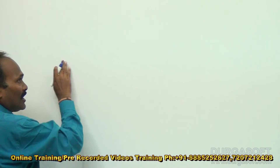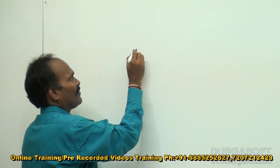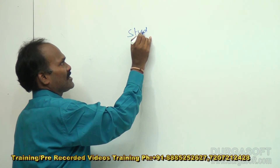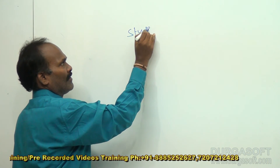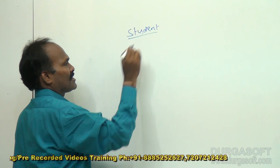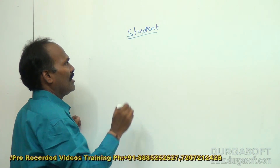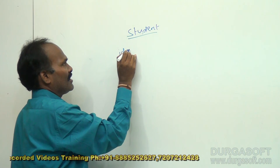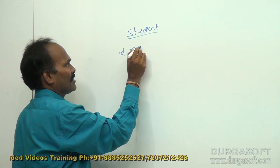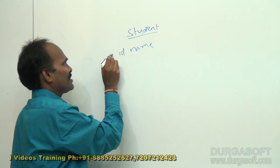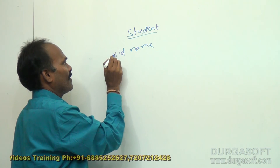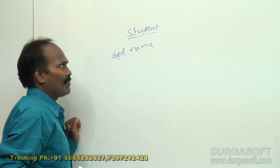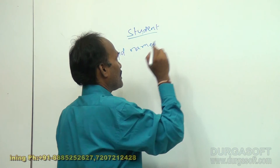Suppose here we have a table called students - a very simple example. In the student table we have some fields like the ID of the students and the name of the student. This is the student ID, and the name is also there in the student table.